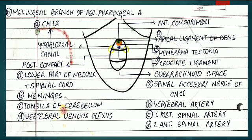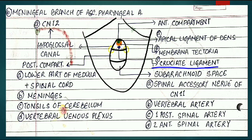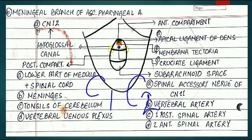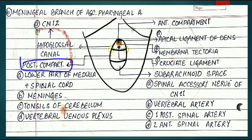The anterior compartment contains the apical ligament of dens. Your first cervical vertebra is the atlas, then comes the axis, and between them is a projection called the dens - and that lies in the anterior compartment of the foramen magnum. The second content is the membrana tectoria. The third content is the cruciate ligament - it is called cruciate because it is present in the form of a cross or plus shape, between C1 and C2.